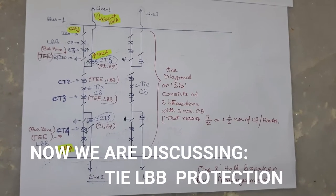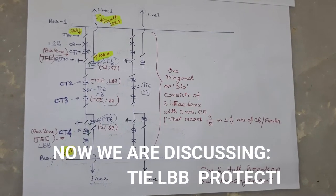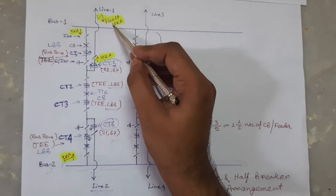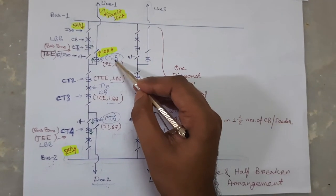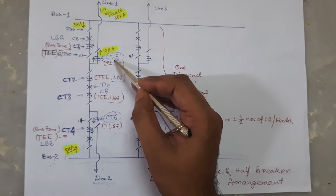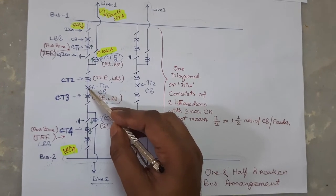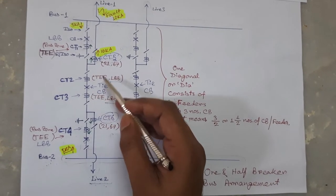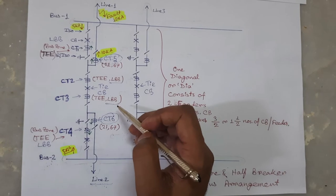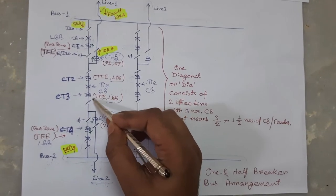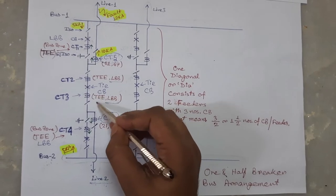Now, we will discuss how tie LBB protection works. When this fault occurs, distance protection operates instantaneously and that distance protection relay sends trip pulse to this circuit breaker and this distance relay also initiates tie LBB protection.